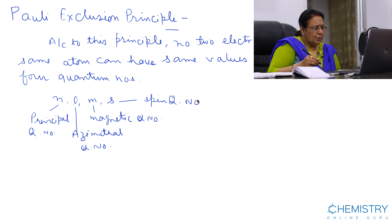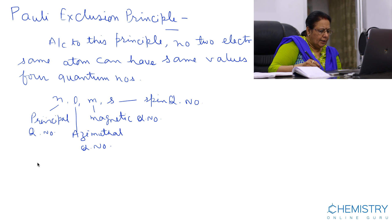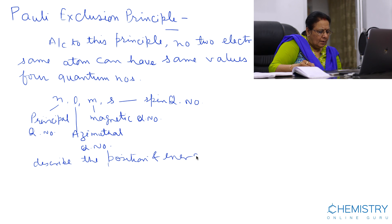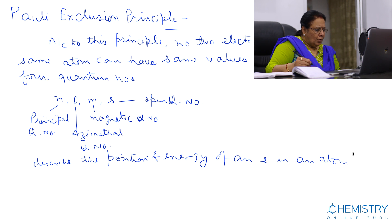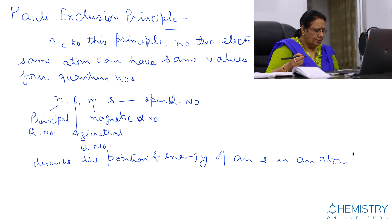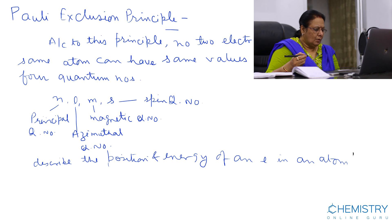These four quantum numbers are required to describe the position and energy of an electron in an atom. No two electrons can have the same position and energy in an atom. Therefore, no two electrons of an atom can have the same value of all four quantum numbers.